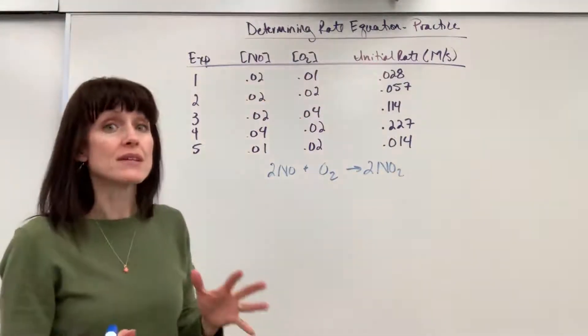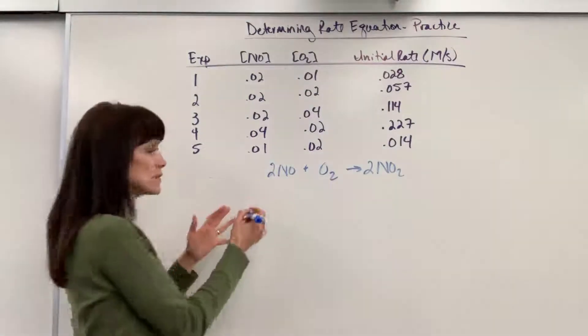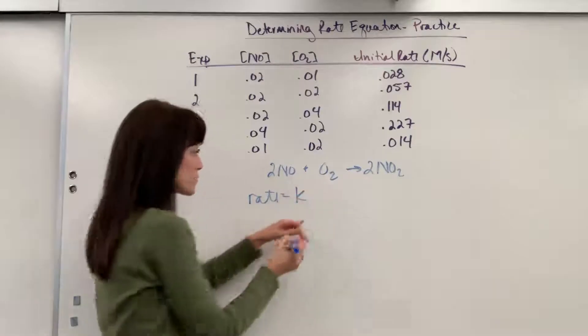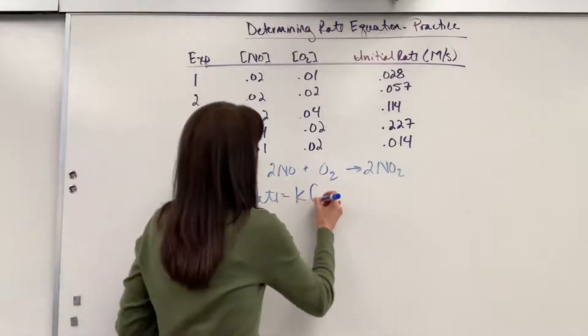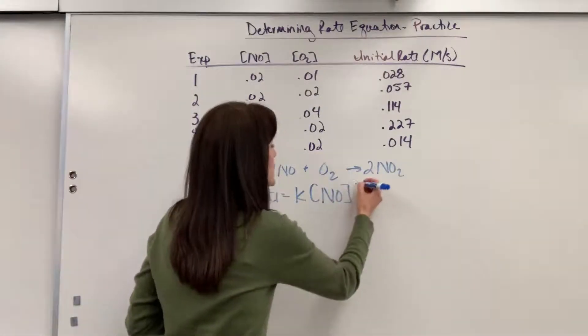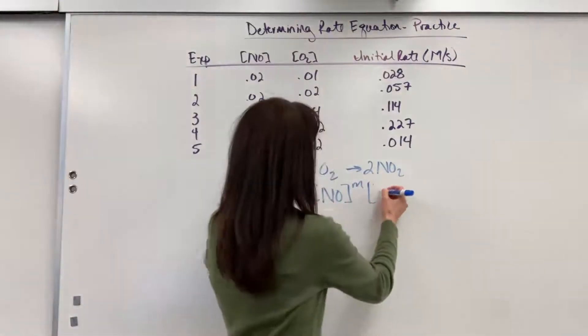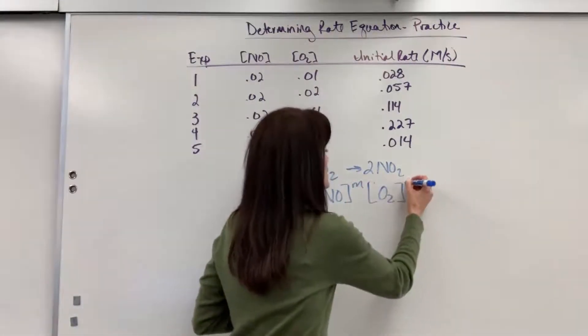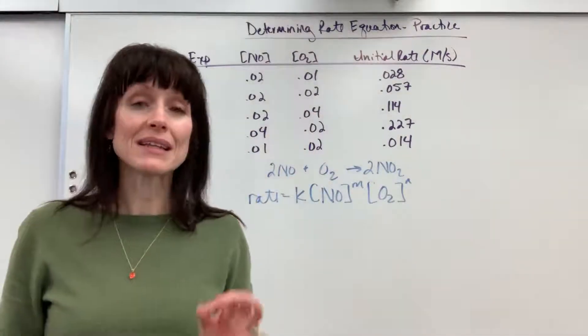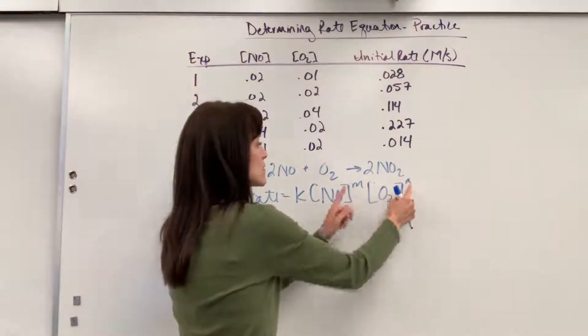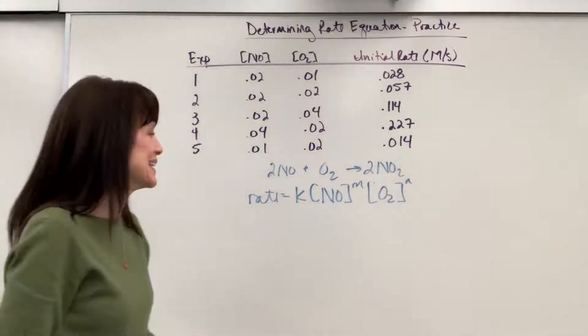We know this much about the rate law. It will look at minimum like this: Rate equals the rate constant times concentration of NO raised to some order M, times the concentration of O₂ raised to some order N. Remember, the rate law is completely dependent on the reactants. We need to figure out what are M and N.